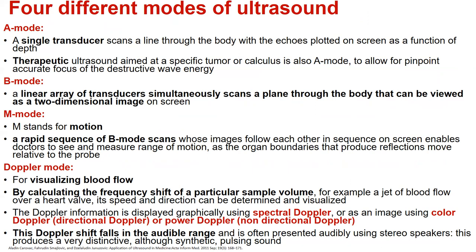We can use four different modes of ultrasound. The so-called A mode, when a single transducer scans a line through the body with echoes plotted on screen as a function of depth — mainly used as therapeutic ultrasound. The B mode, or so-called brightness mode, when a linear array of transducers simultaneously scans a plane through the body that can be viewed as a two-dimensional image on the screen.